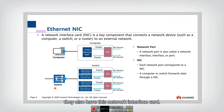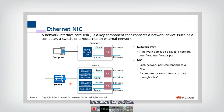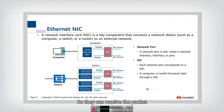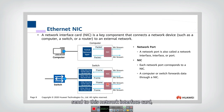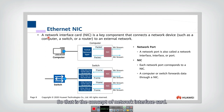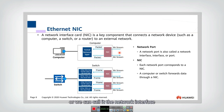Similarly for the switch, it also has network interface cards, and actually it has multiple network interface cards because a switch needs multiple interfaces to connect to multiple devices. It can receive the bit stream from one device, translate it into frames, and then send it to another network interface card — for example, to another port — and then send it to other devices. So that is the concept of the network interface card, also called a network port or network interface.